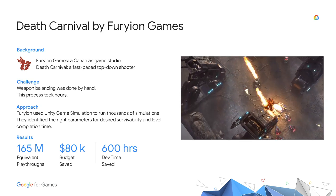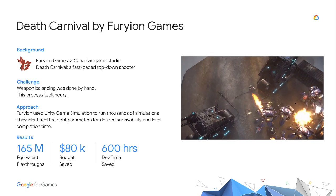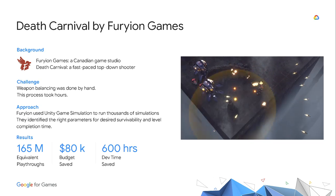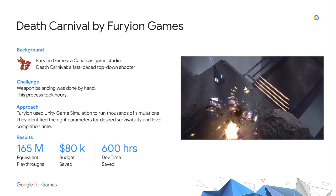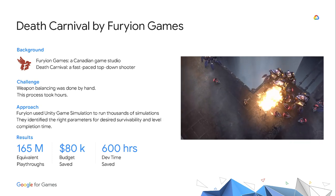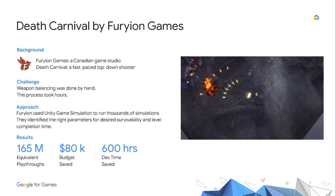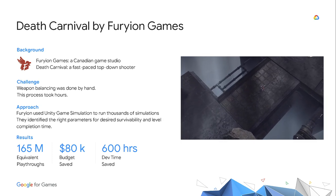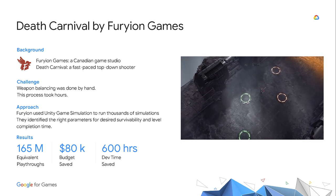In earlier versions of the game, the team balanced weapons by hand. They would configure a weapon, compile a build, send it out to playtesters, and watch them play. Based on the feedback, they would reconfigure the weapons and repeat. Each iteration of this process would take hours.